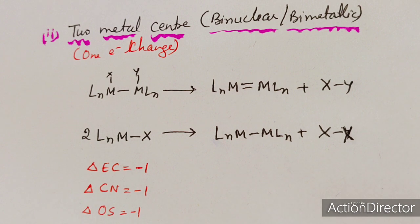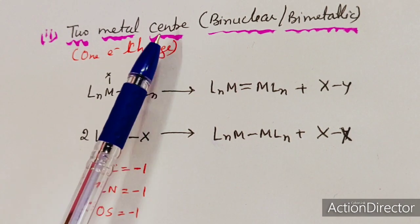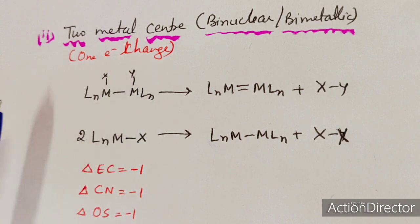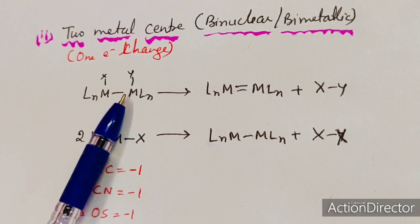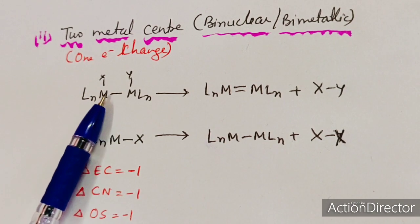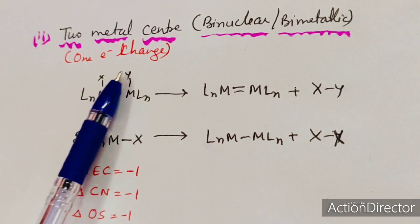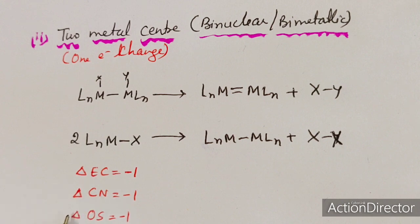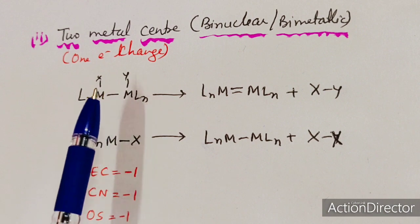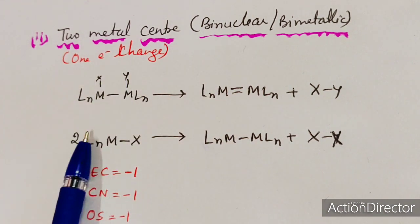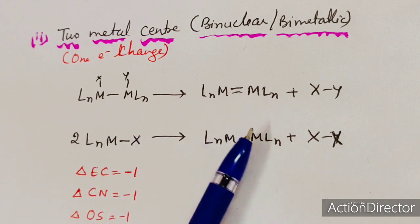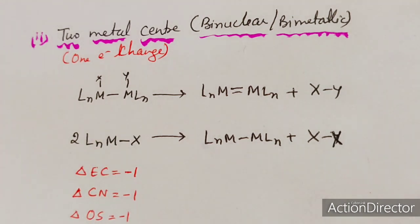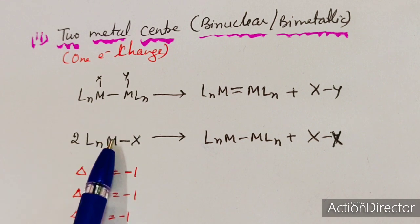The other type of reductive elimination is two-metal-center based, also known as binuclear, bimetallic, or one-electron-change reductive elimination. There are two metal centers, and X and Y will reductively eliminate so that the change in electron count, coordination number, and oxidation state is each minus one. The electron count reduces by one, oxidation state reduces by one, and coordination number reduces by one.